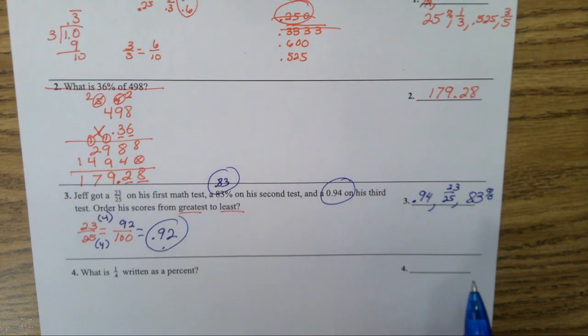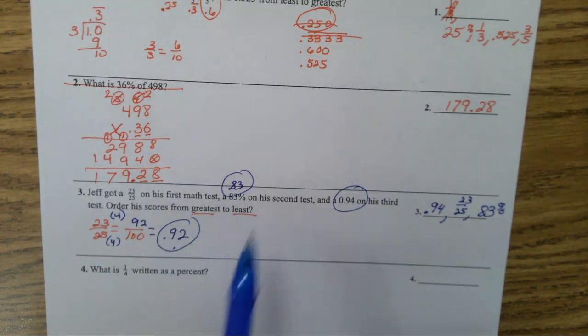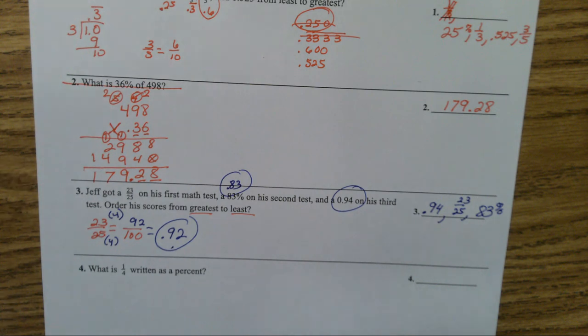And the smallest one is 83%. Now you write it down the way that it is in the question. You could do it as a fraction too, that's fine.